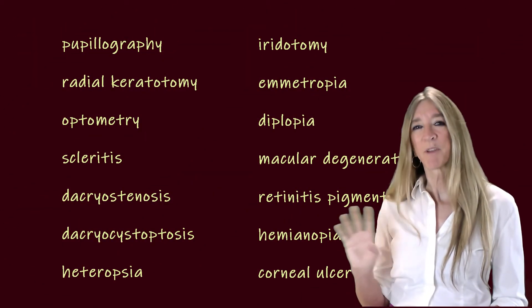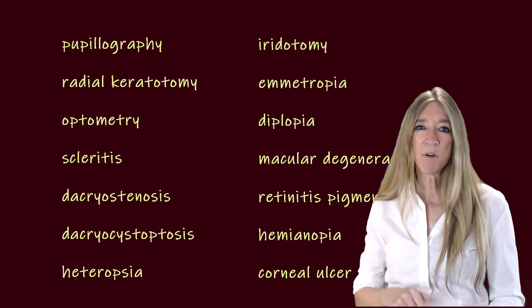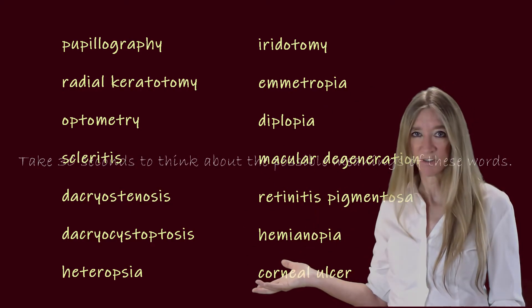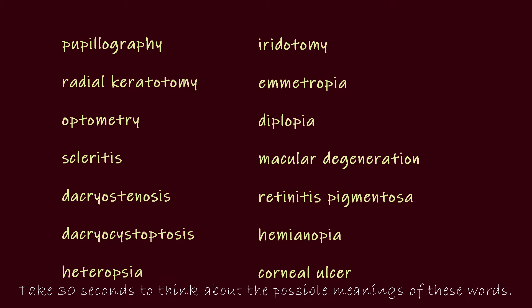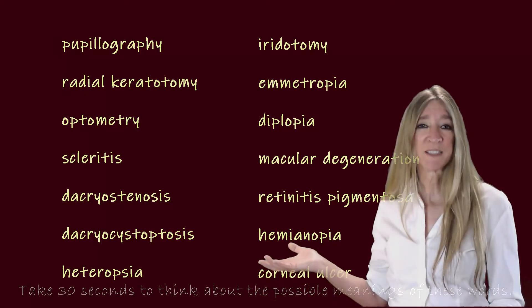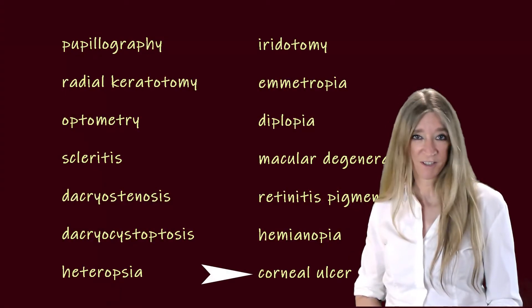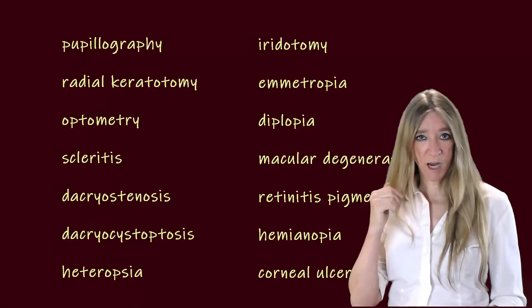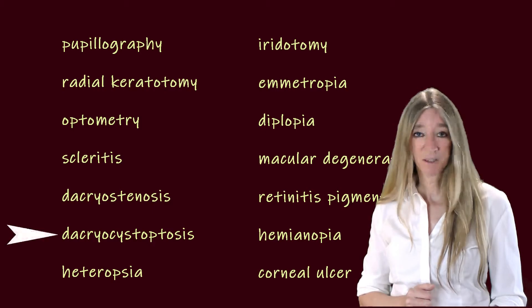Let's do something backwards — instead of me giving the meanings of these words, I will give a meaning and you see if you can find the term. We'll start with the ridiculously easy one: an ulcer of the cornea — corneal ulcer. And what term would you use for a prolapse, a falling forward of the tear sac? Dacrycystoptosis.